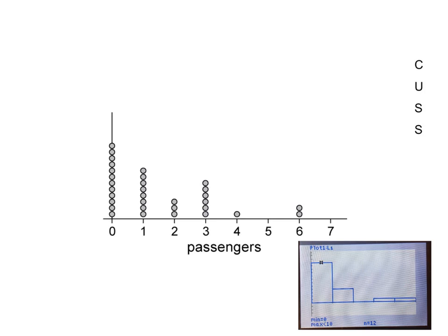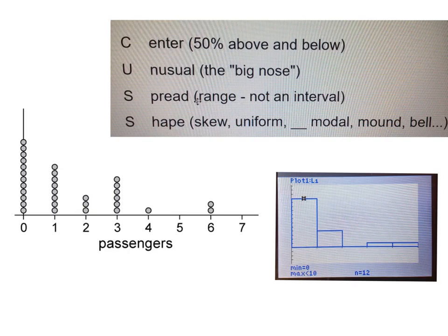Finally, I want to talk about the way we discuss or describe distributions. The first question on the free response on the AP exam almost always has to do with describing a distribution. And we use the acronym CUSS. You can see it along the side here. CUSS stands for center, unusual, spread, and shape.